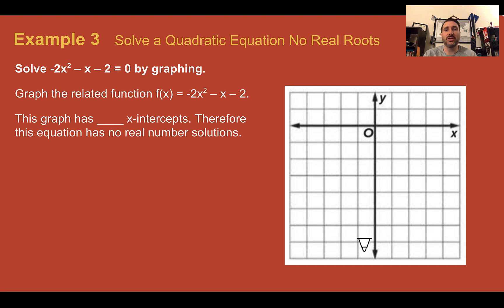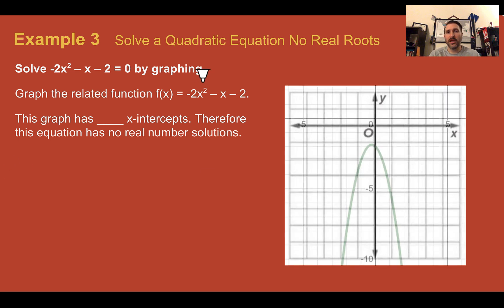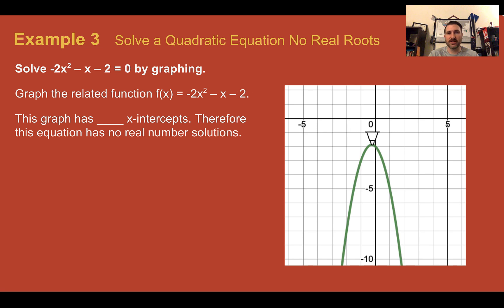Example three, solve a quadratic equation with no real roots. If we graph this, it looks something like this. We can see our vertex is here and it's going downward away from our x-axis, which is up here. So this has no x-intercepts and never crosses the x-axis. So this one would have no solution.